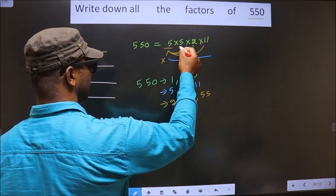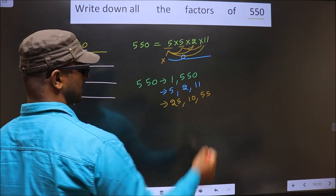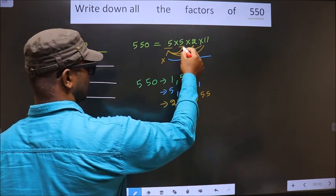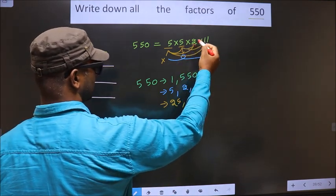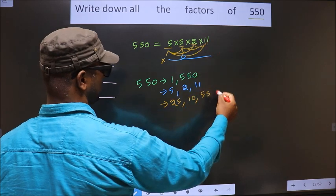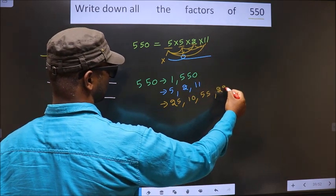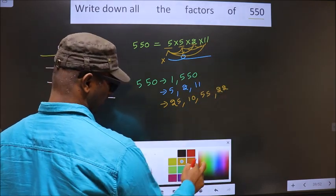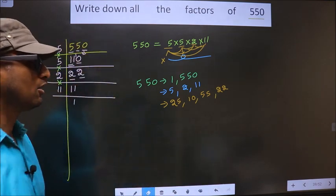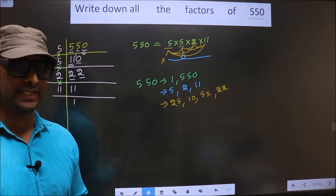So now you leave this 5. If you fix 5 and combine, you get the same numbers. So leave this 5 even. Now fix 2, combine with 11. 2 into 11 is 22. So no other combination possible.